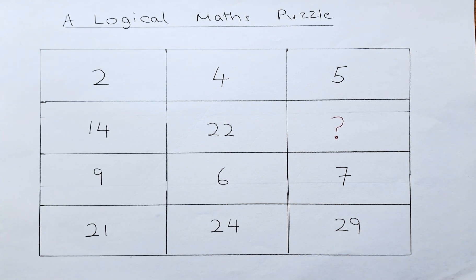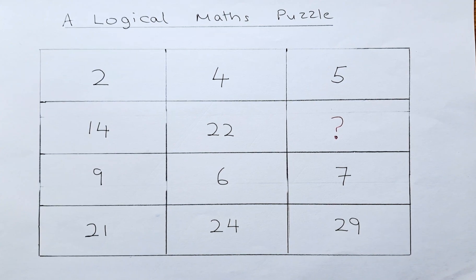9, 6 and 7 on the third row and 21, 24, 29 on the fourth row.